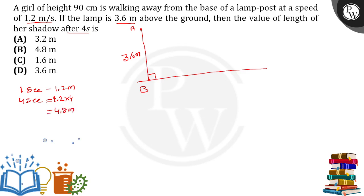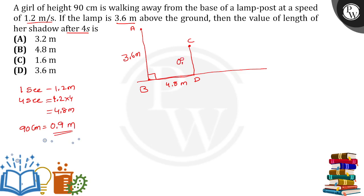So she traveled 4.8 meters from the lamp post in 4 seconds. Here she is standing. The height of the girl — let's call it CD — is 90 centimeters, which equals 0.9 meters.